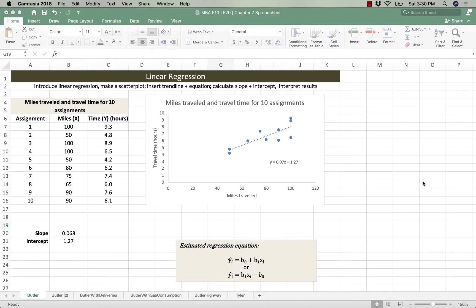In the last video, we plotted this line of best fit through these data points for our 10 trucking deliveries, looking at the relationship between the miles traveled and the total time it took the driver. We used a couple of different methods to come up with this estimated regression equation—the equation for this line that has a slope of 0.068, rounded here to 0.07, and an intercept of 1.27.